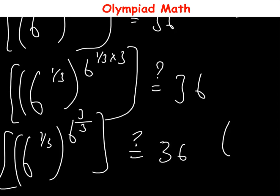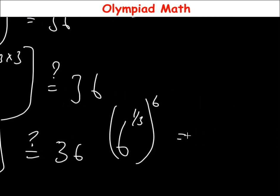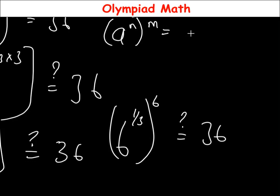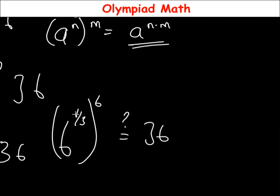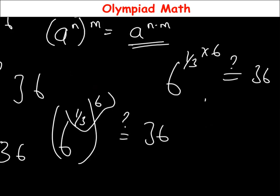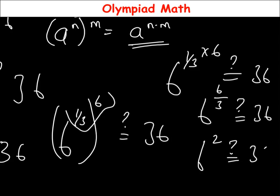So we now have 6 raised to power 1 over 3, all raised to power 6. Applying the rule again: 1 over 3 times 6 equals 6 over 3 equals 2. So we get 6 raised to power 2, which equals 36. This confirms the left-hand side equals 36, matching the right-hand side. The value of y satisfies the given equation.